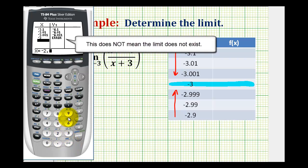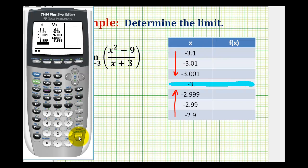Negative 2.999, negative 2.99. Let me go ahead and record these in the table.